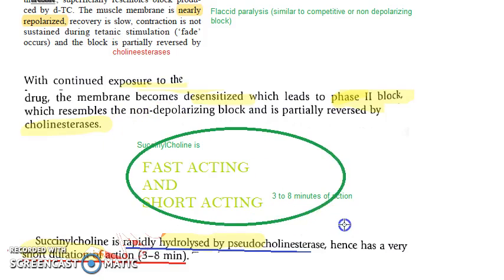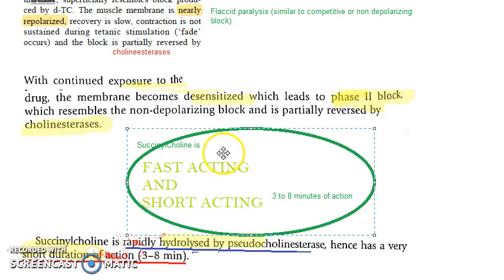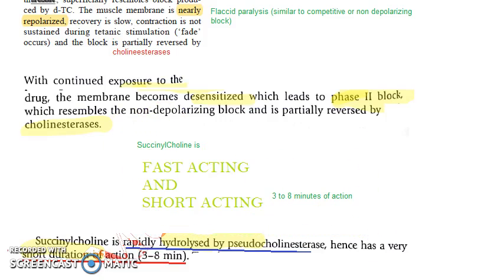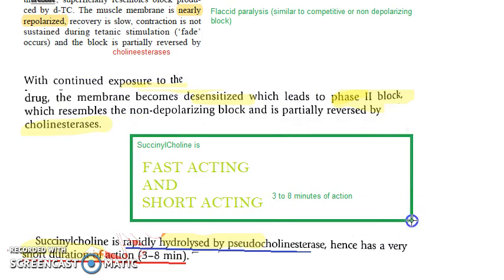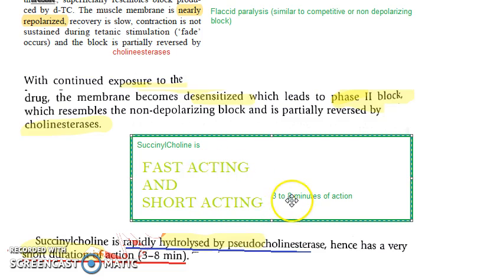In the last video we covered succinylcholine: its introduction, chemistry, and mechanism of action — phase 1 block and phase 2 block. The main thing to know is that succinylcholine is a fast-acting and short-acting skeletal muscle relaxant, with only 3 to 8 minutes of action.